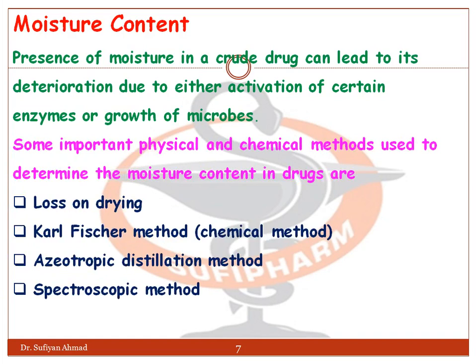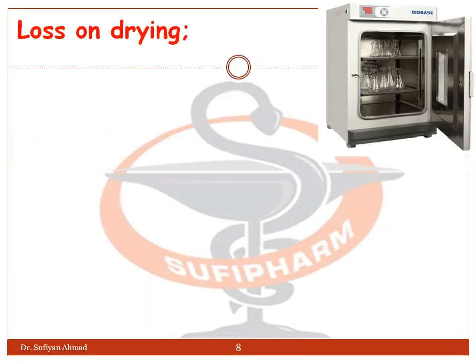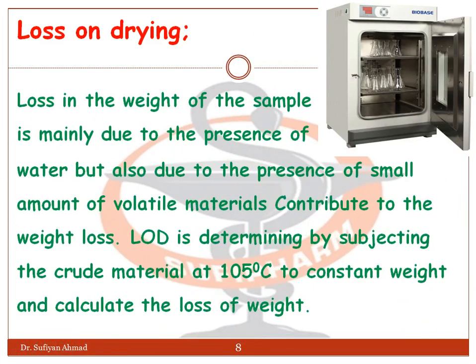The methods for moisture determination include: Loss on Drying (LOD), Karl Fischer method, azeotropic distillation method, and spectroscopic method. In the LOD method, the loss in weight of the sample is mainly due to the presence of water, but also due to a small amount of volatile material that contributes to weight loss. The LOD is determined by subjecting the crude material to 105°C until constant weight, then calculating the loss of weight.